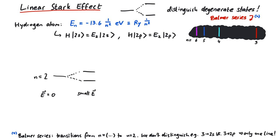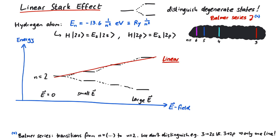For a small electric field, the lines will be a little bit apart, but if we have a stronger electric field, the lines will be even wider apart. At first, this goes linearly with the electric field, and this is what we will investigate now.